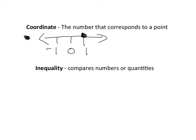Our next key term is inequality. Inequality can be found with these symbols: greater than, less than, greater than or equal to, less than or equal to, and — often forgotten but still an inequality — not equal to. We use these symbols to compare numbers or quantities.